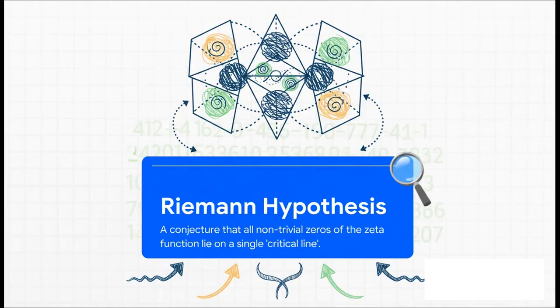So this hypothesis, which has been around for over 160 years, makes this really specific kind of wild claim about something called the Riemann zeta function. It basically predicts that all the function's most important solutions—what they call its non-trivial zeros—they don't just appear randomly. Nope, they all fall perfectly onto a single straight line.